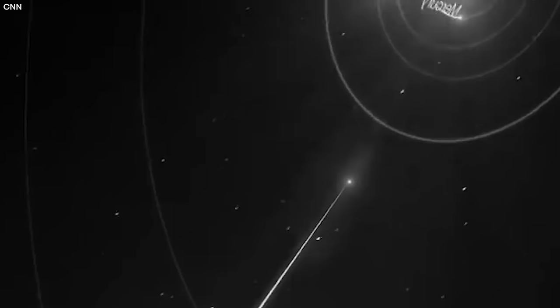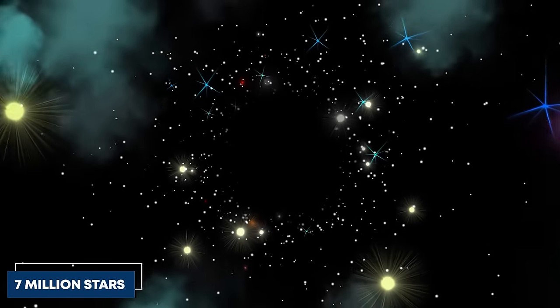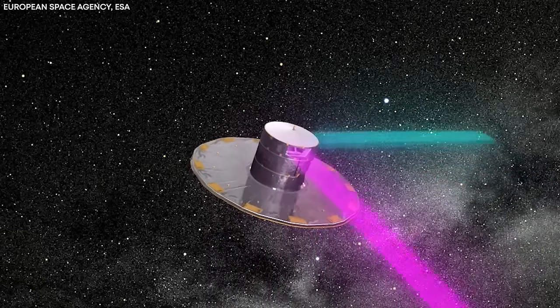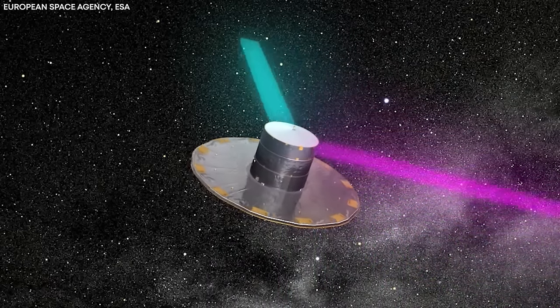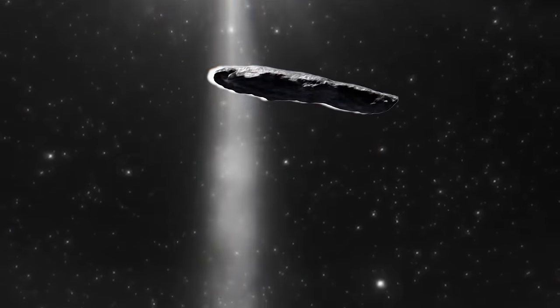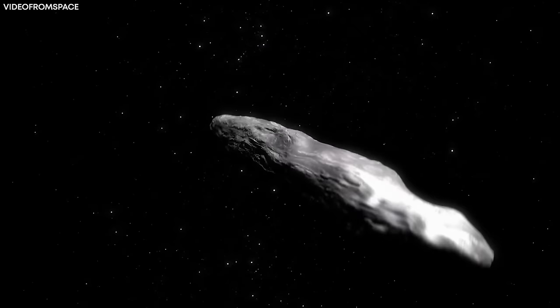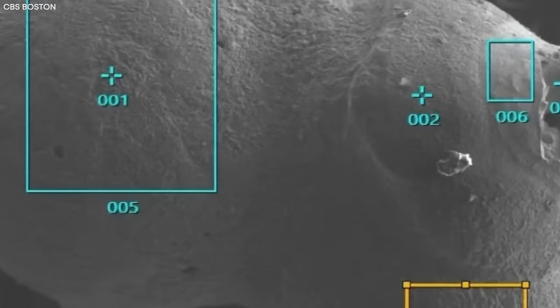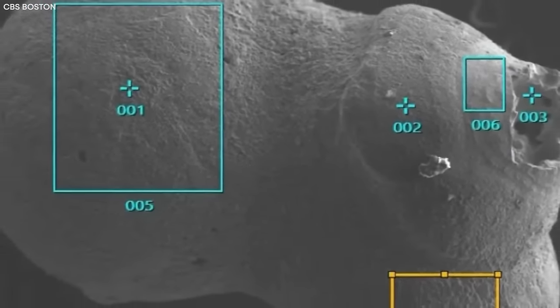To investigate the origin of Oumuamua, scientists have meticulously traced its trajectory back to a time before it entered our solar system. Corinne Bailor-Jones of the Max Planck Institute for Astronomy undertook the challenging task of comparing Oumuamua's path with the previous positions of approximately 7 million stars. By analyzing data from the Gaia spacecraft, which has meticulously tracked these stars, Bailor-Jones reconstructed their orbits and looked for intersections or similarities with Oumuamua's trajectory. During his investigation, Bailor-Jones made an intriguing discovery.